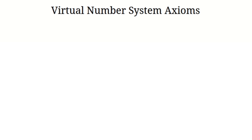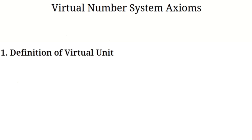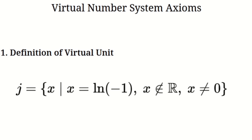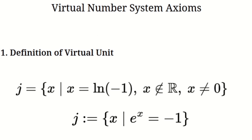The virtual unit J. First, let's talk about the virtual unit, which is represented by the letter J. We define J as the natural logarithm of negative one. You may wonder what that even means. In simple terms, it's a number that doesn't exist in the regular set of real numbers. J is not a real number, and it's also not equal to zero. This unique number J opens the door to the entire virtual number system.